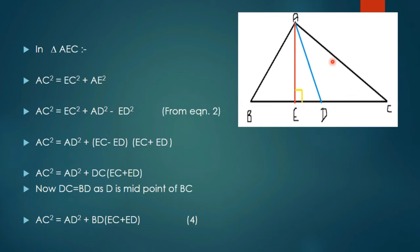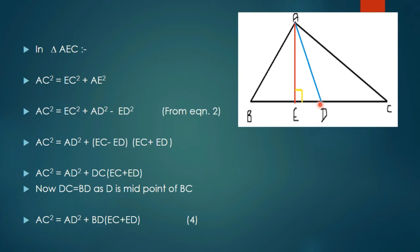Now in triangle AEC, again using Pythagoras theorem: AC square is equal to EC square plus AE square. We put the value of AE square from equation 2, that is AD square minus ED square. So AC square, using the A squared minus B squared identity, equals (EC minus ED)(EC plus ED). EC minus ED is DC. Since AD is a median, D is the midpoint of BC, so BD equals DC. We put BD in place of DC, giving us equation number 4: AC square equals AD square plus BD into (EC plus ED).